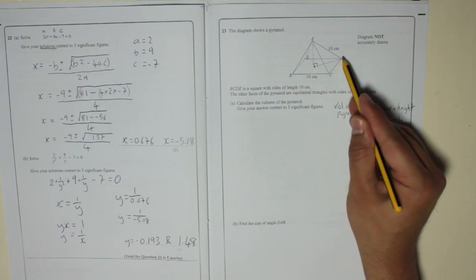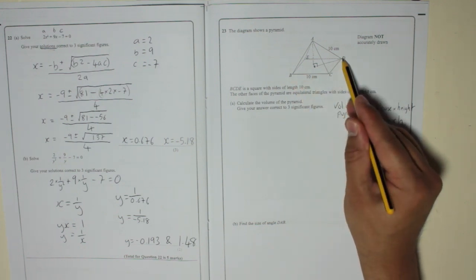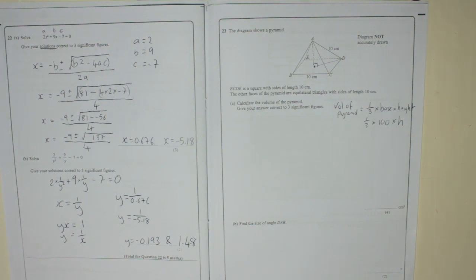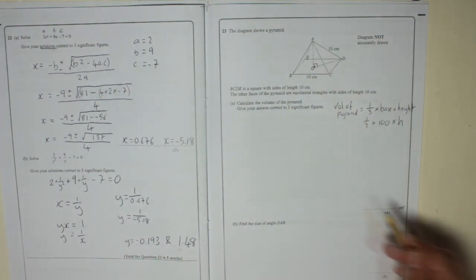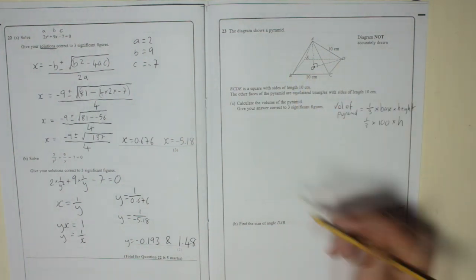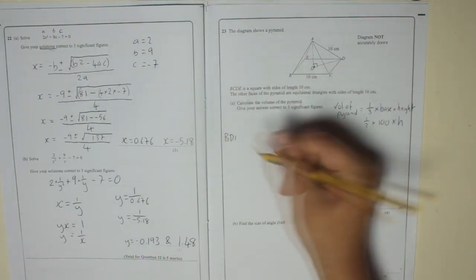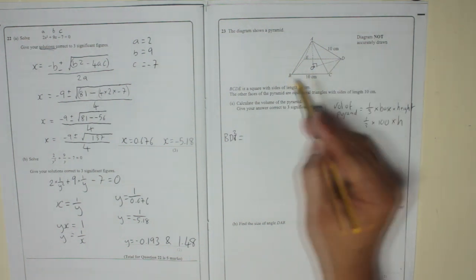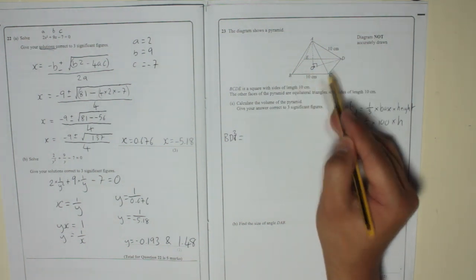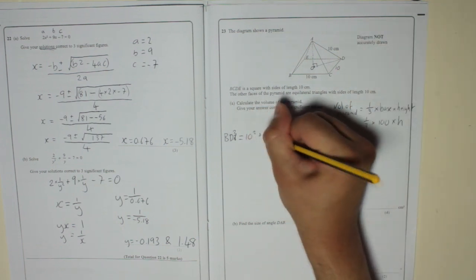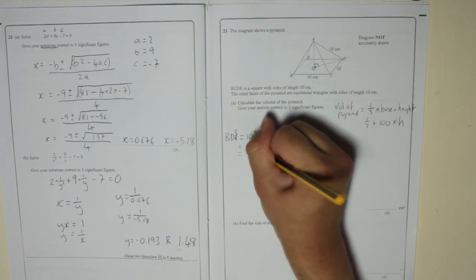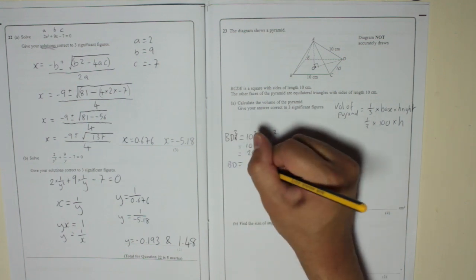Now, because we know that's 10 and that's 10, we can actually work out the whole diagonal. So what I'm going to do is I'll call the middle O. So BD, the entire diagonal, BD is equal to, well BD squared, because it's going to be Pythagoras. BD squared is equal to BC squared plus CD squared. They're both 10. So it's 10 squared plus 10 squared, which is equal to 100 plus 100, which is 200. Which means BD is equal to the square root of 200.